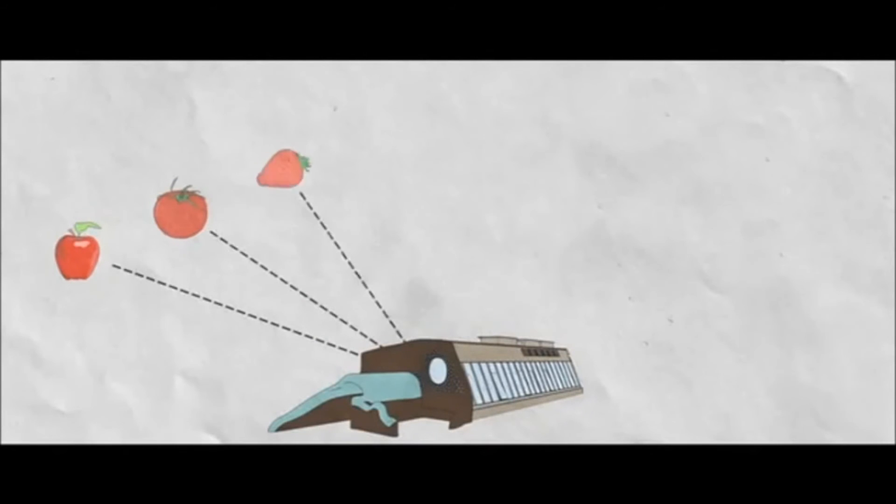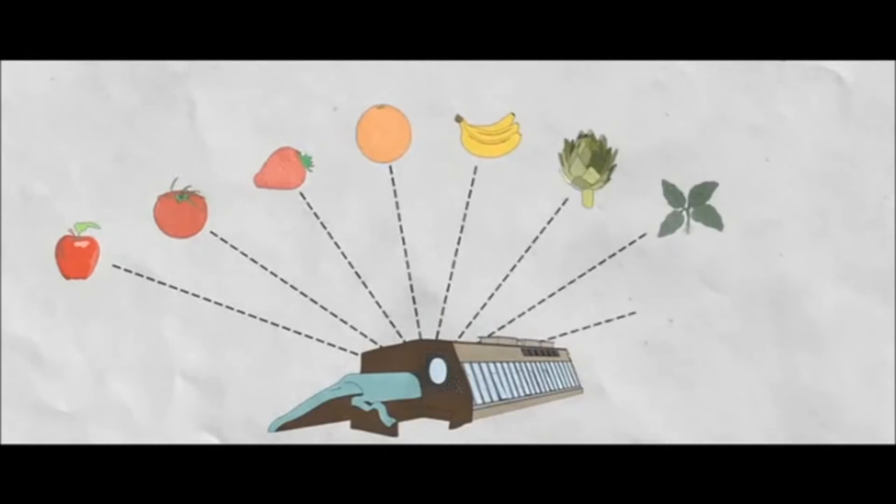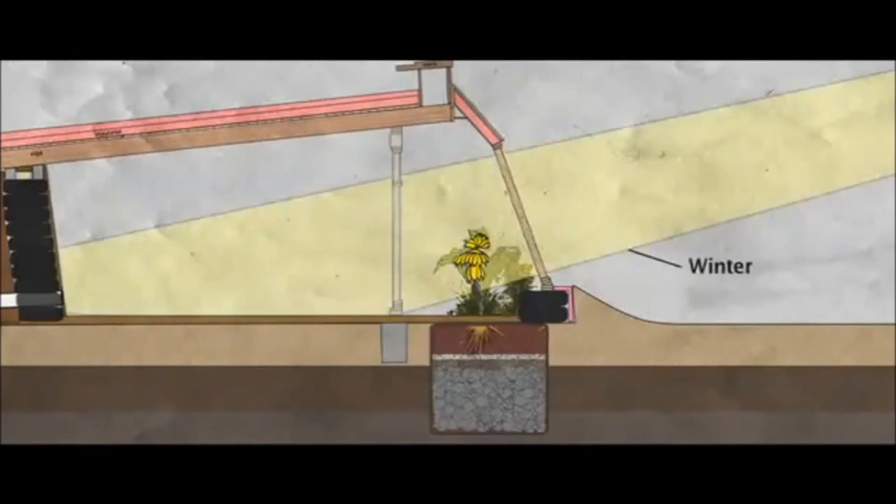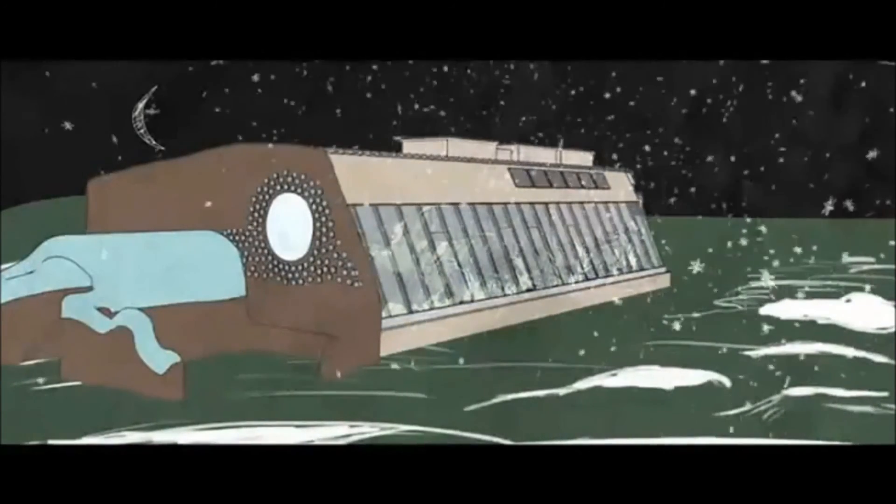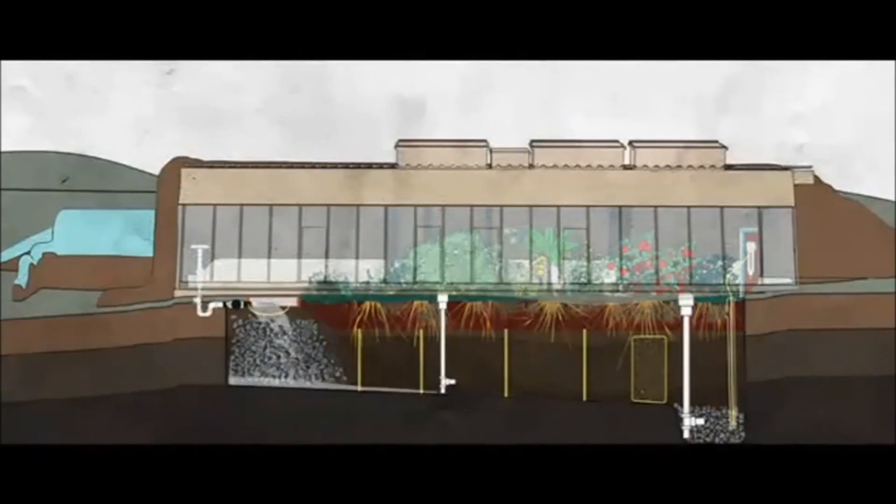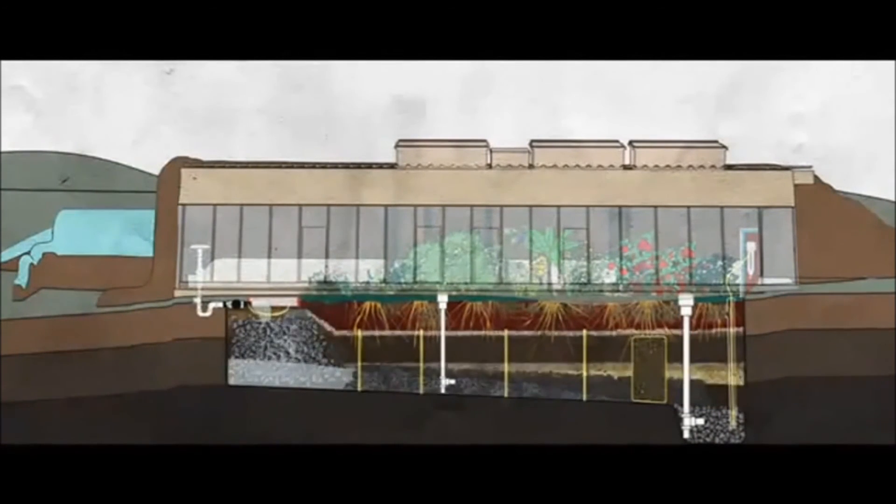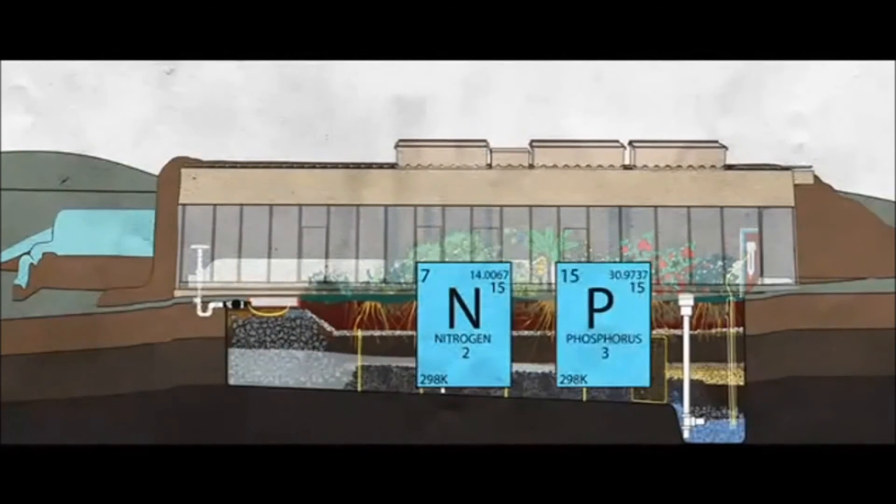In short, earthships can grow food year-round by providing sunlight all year, protection for the plants from extreme conditions like frost, an automatic watering system, a good soil composition and nutrients from grey water like nitrogen and phosphorus.